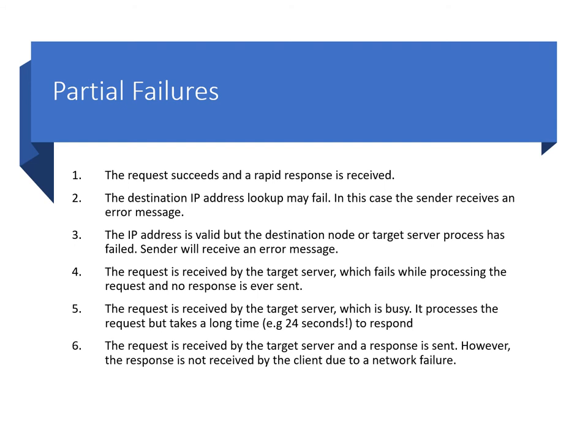Numbers one to three are easy for the client to handle, as a response is received rapidly — either a result or an error message — allowing the client to proceed. Failures that can be detected quickly are easy to deal with. Numbers four to six pose a problem: the client has no insight into why a response has not been received. From the client's perspective these three outcomes look identical — it cannot know whether the response will eventually arrive or never arrive. More insidiously, it cannot know if the operation succeeded and the result was lost, or if the request is simply delayed. These faults are collectively known as crash faults.